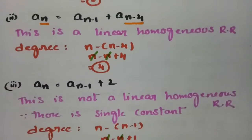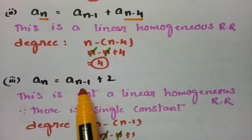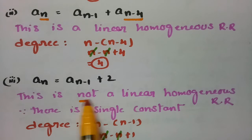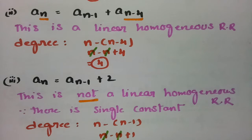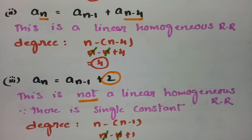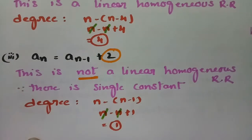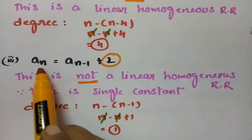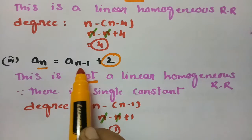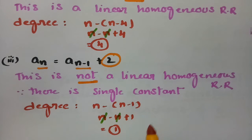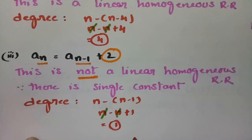The next example is aₙ = aₙ₋₁ + 2. This is not a linear homogeneous recurrence relation since there is a standalone constant term. The degree is the difference between the greatest subscript n and the lowest subscript n−1, so the degree is 1.